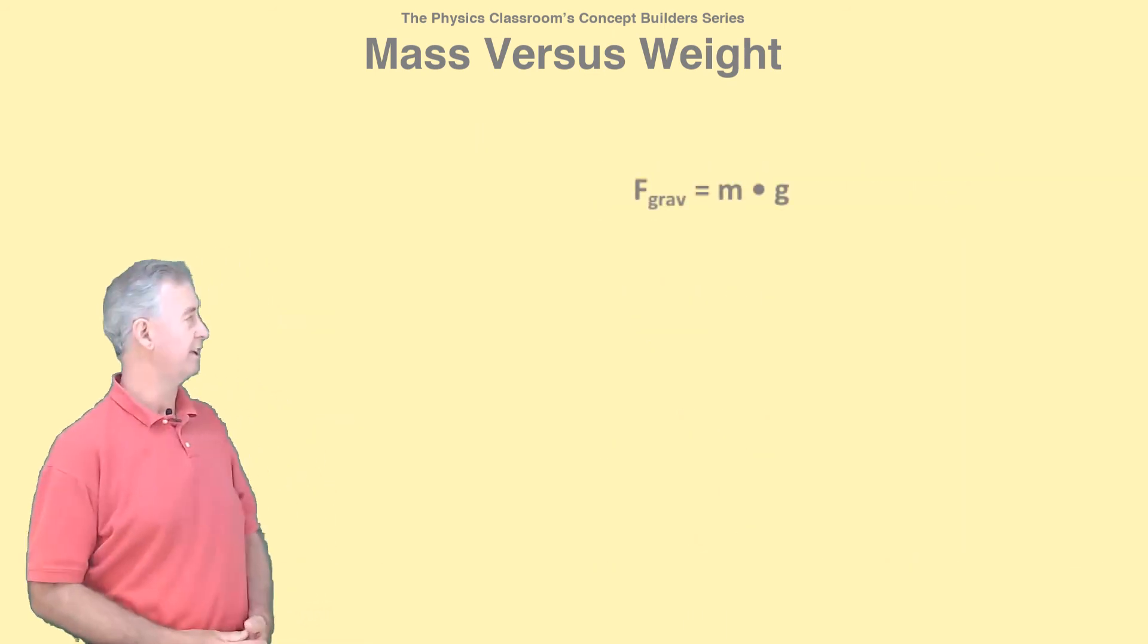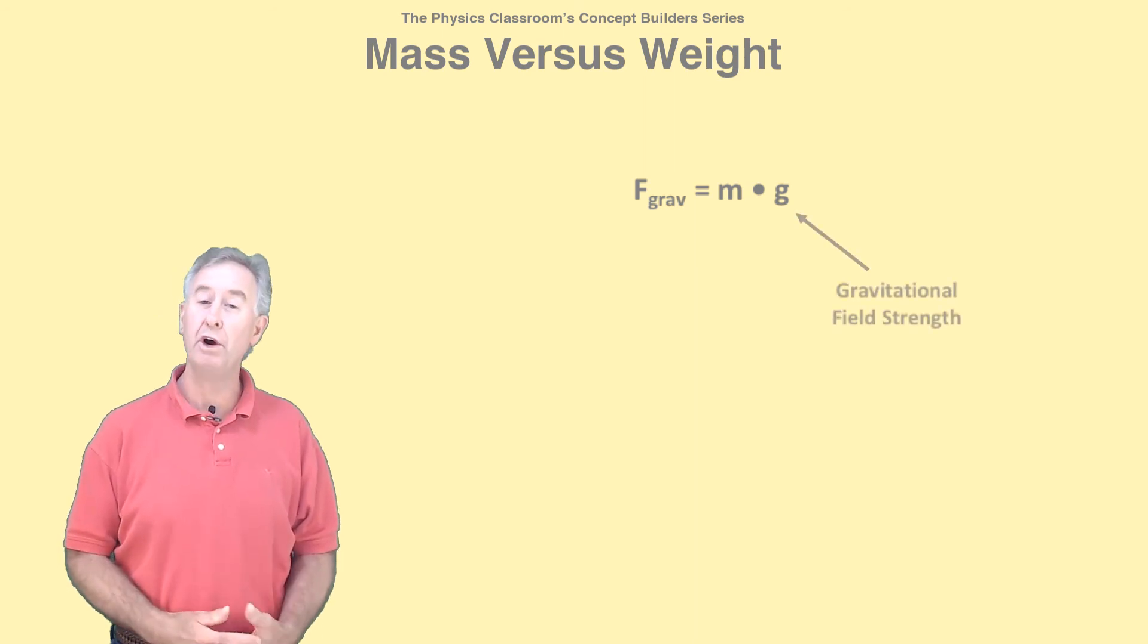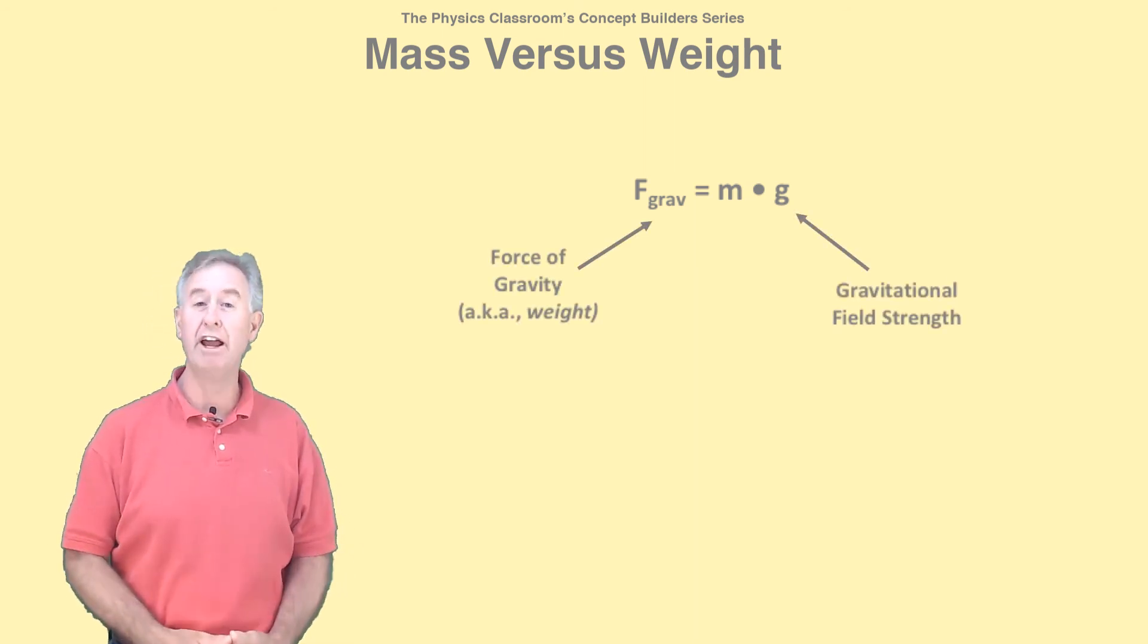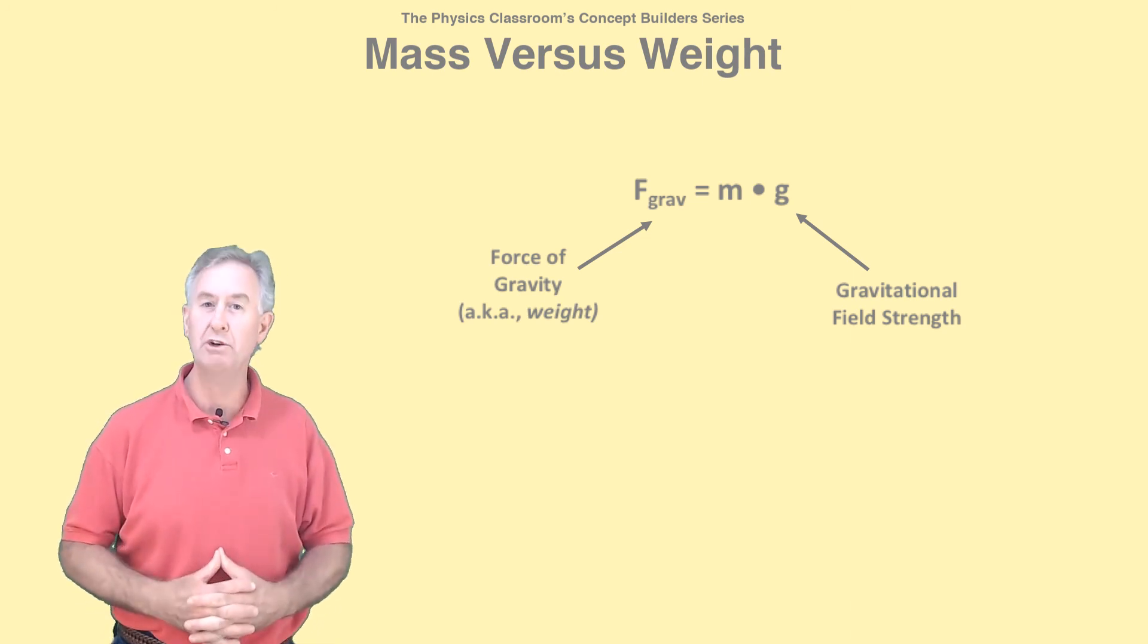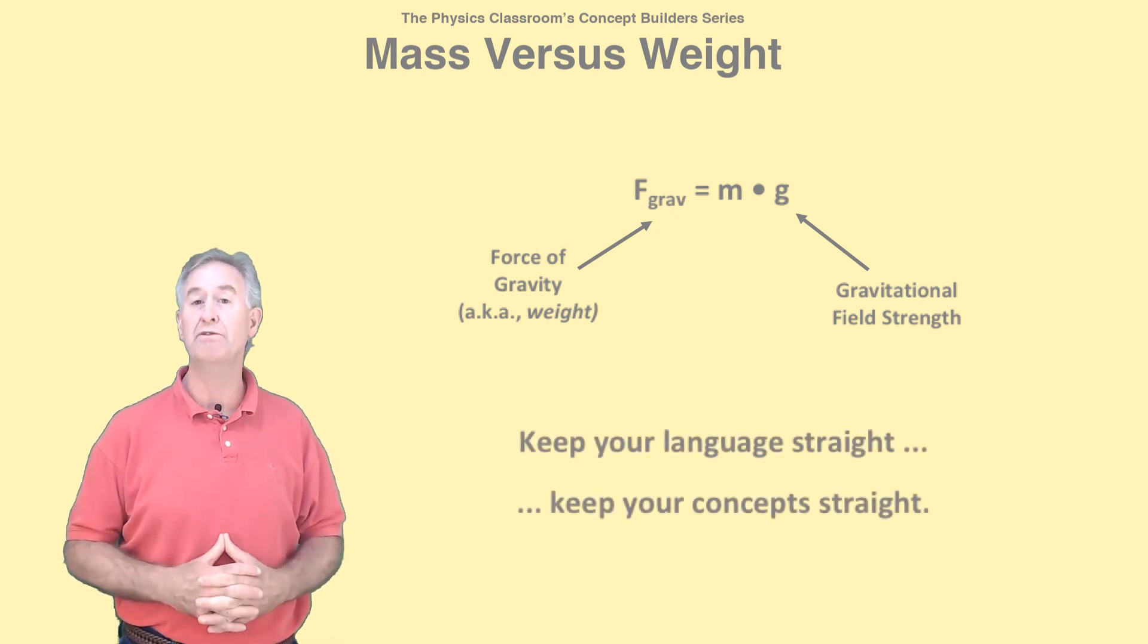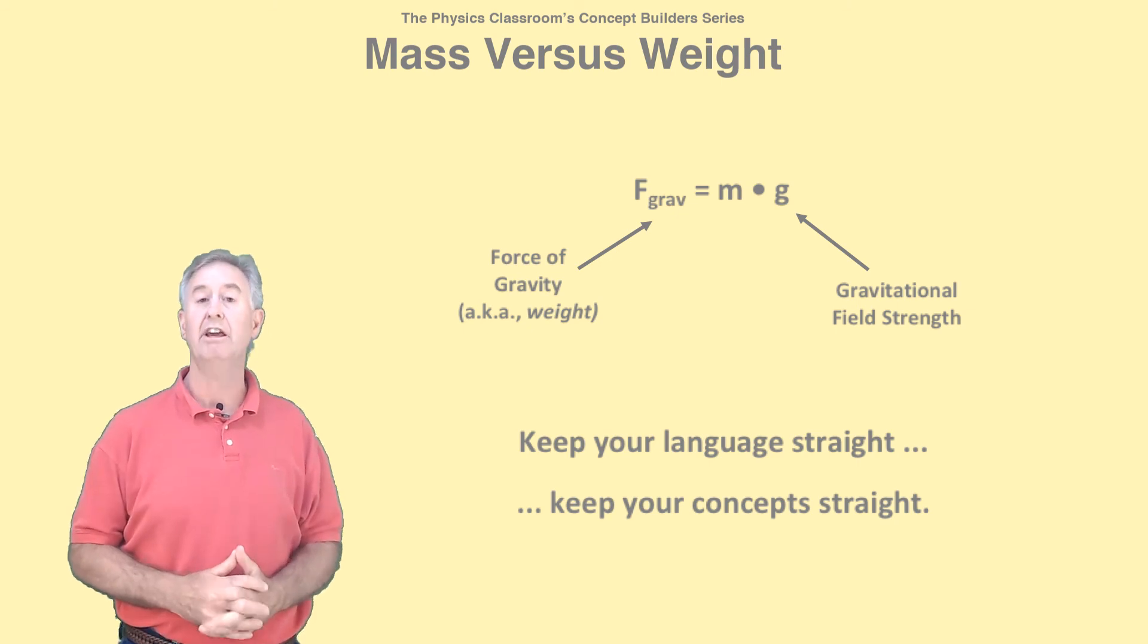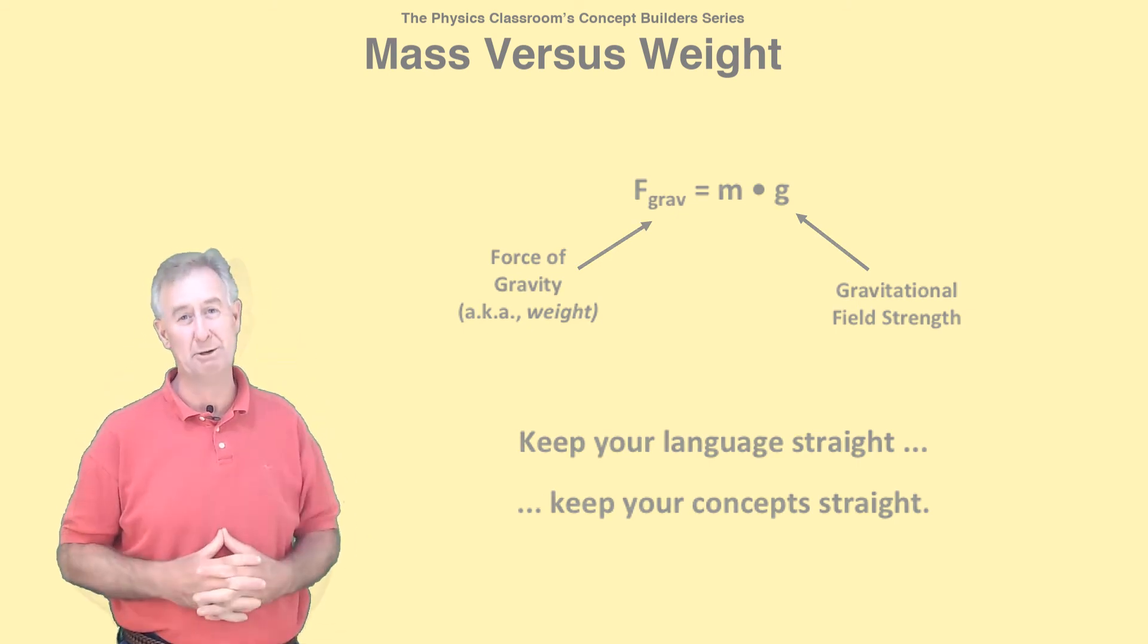The equation f-grav equal mg can cause trouble if you're not careful. Avoid referring to g as gravity. And avoid referring to f-grav as gravity. The moment you do, you introduce confusion that doesn't need to be there. f-grav is the force of gravity. g is the gravitational field strength. If you keep the language straight, you'll keep the concepts straight in your brain.